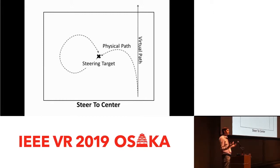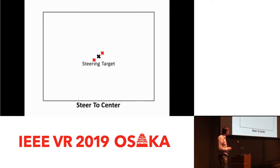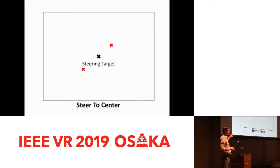Ideally, we're already steering people away from obstacles and into open space, so it seems intuitive we should be able to weave people in and around each other. One approach is subdividing the space — physically dividing it so one user has the left half of the room and one has the right half. That's really not ideal because we want to maximize the amount of physical tracking space that people can wander through.